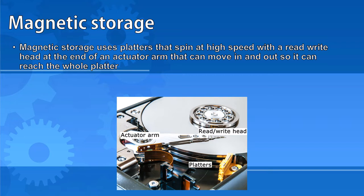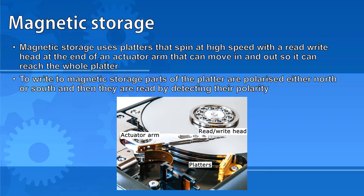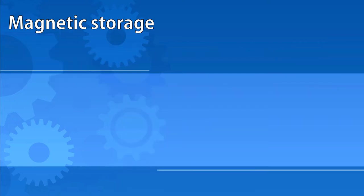To write to magnetic storage, the read-write head polarizes a section of the platter as either north or south. To read from it, it detects the polarity of the section.